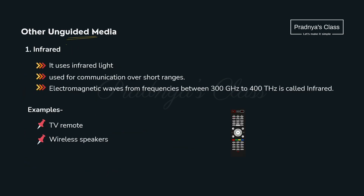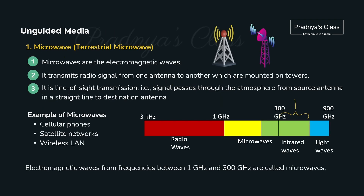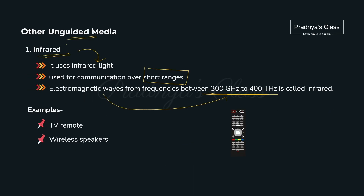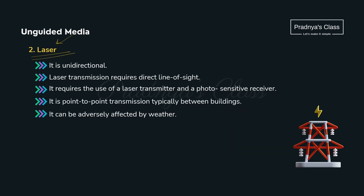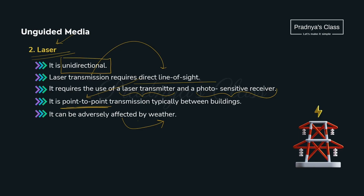There are three more unguided media. Infrared uses infrared light for communication over short ranges. Electromagnetic waves provide frequencies in the infrared range. Examples include TV remotes and wireless speakers. Laser transmission requires a direct line of sight, a laser transmitter, and a photosensitive receiver — it is also called point-to-point transmission. It travels through the atmosphere so it may be affected by weather. It is unidirectional — traveling only from transmitter to receiver.